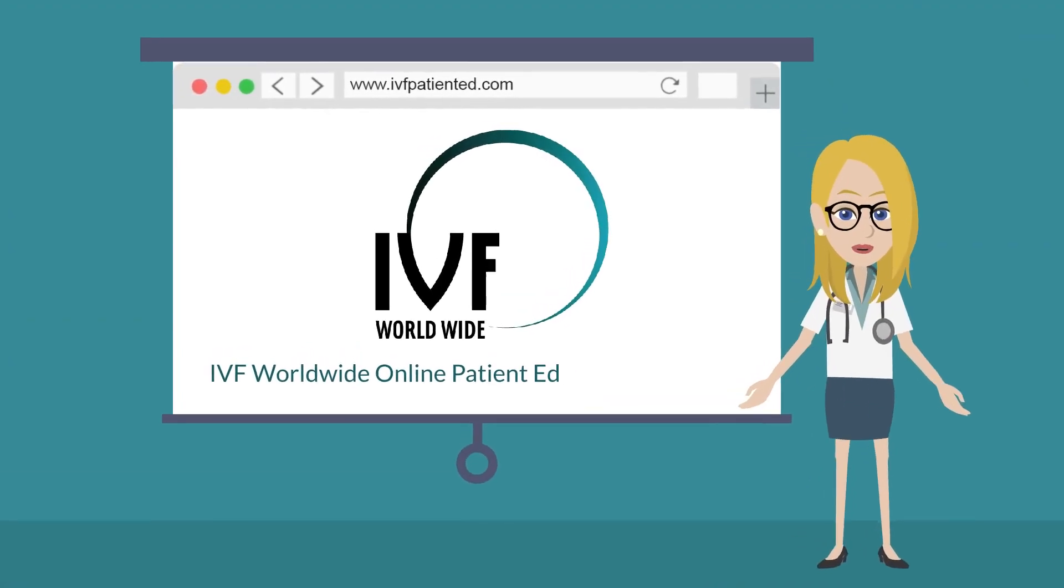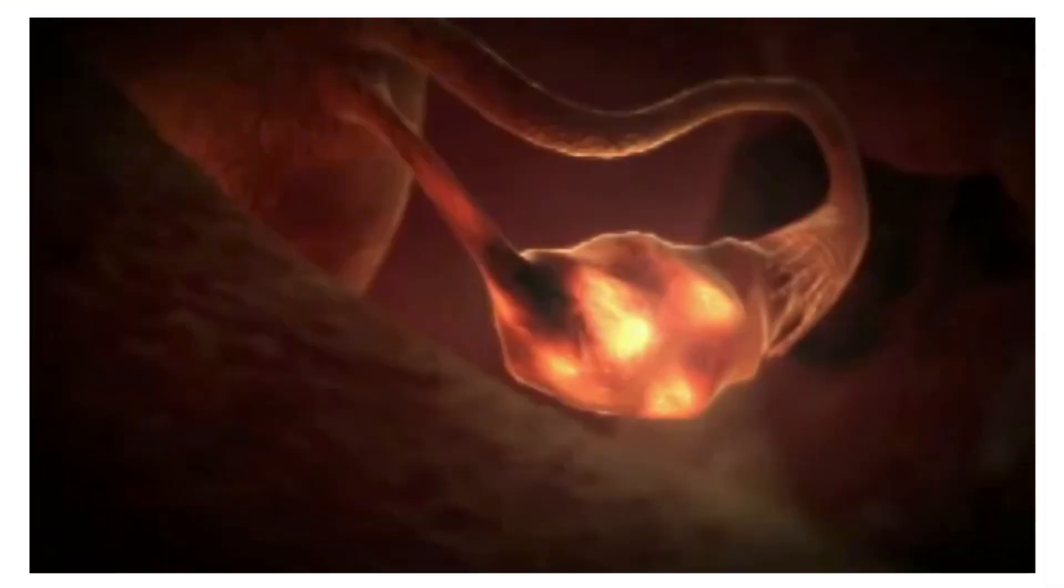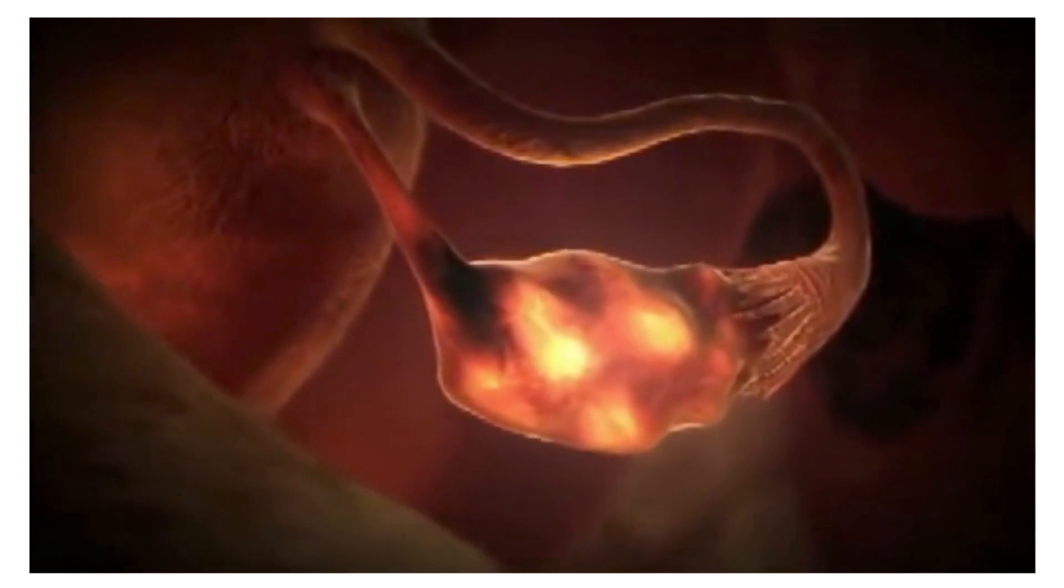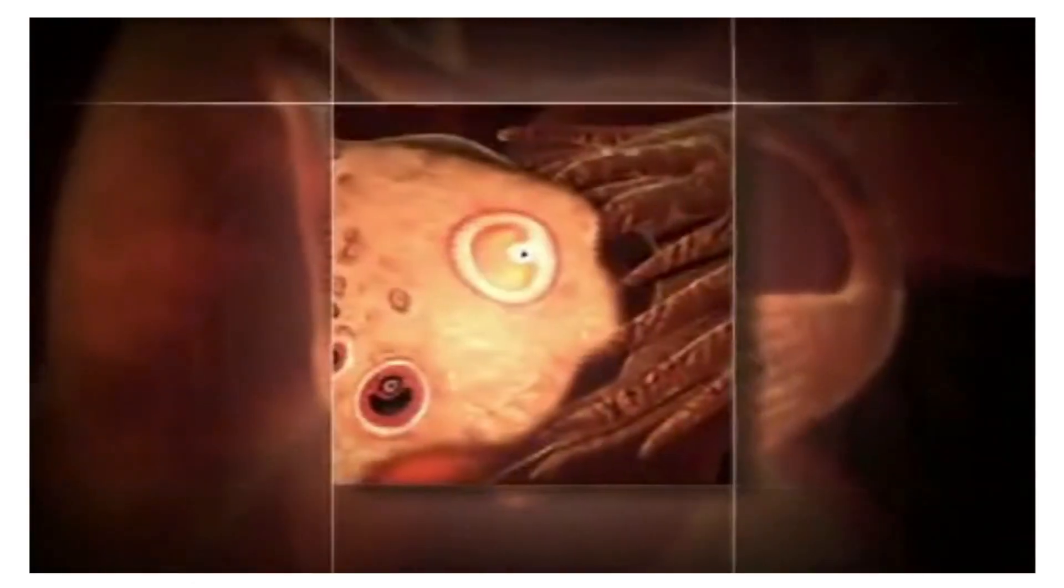This video introduces how IVF works. The menstrual cycle of fertile women usually lasts about a month. During this time and under the influence of the body's own natural hormones,